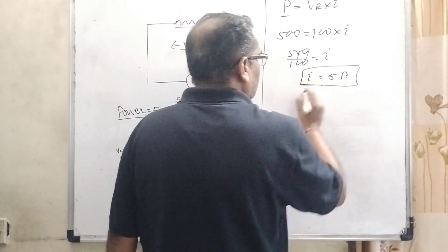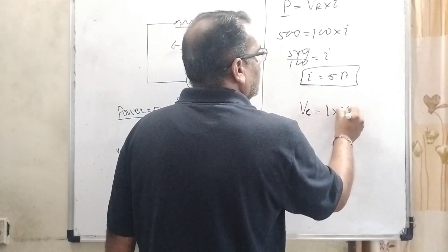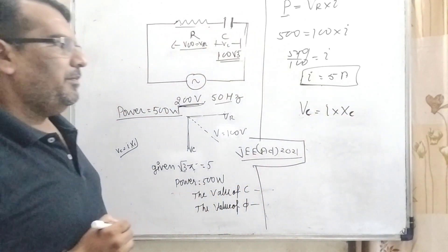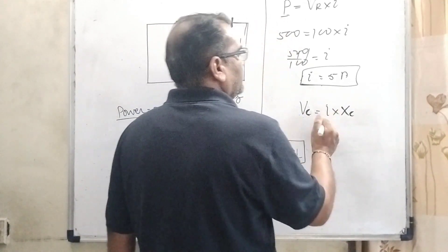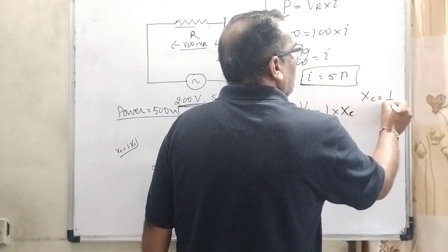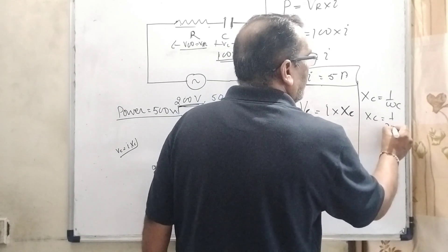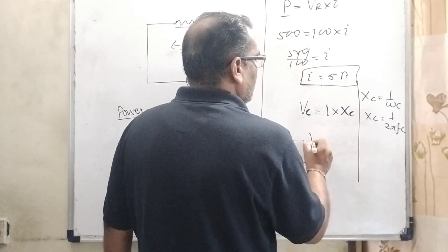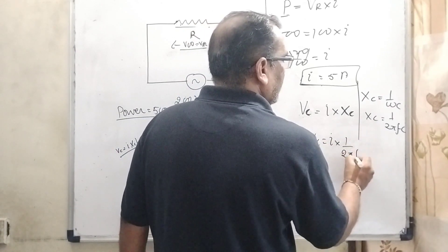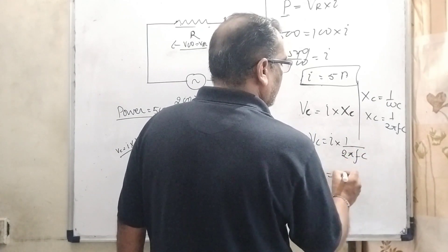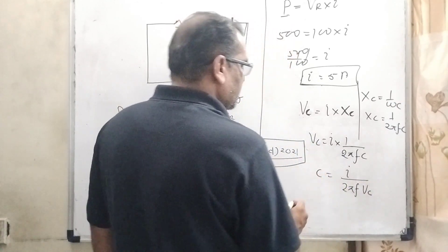Now as we know that V_C equals I times X_C, where X_C is the capacitive reactance — the resistance equivalent of the capacitor. The value of X_C is 1/(ωC), and ω equals 2πf. So V_C equals I times 1/(2πfC), which gives C equals I/(2πf·V_C). Now substitute all values.